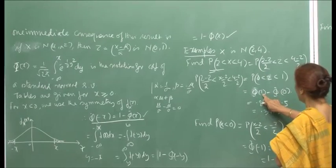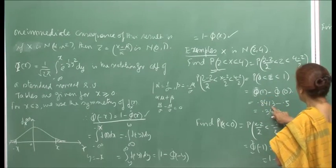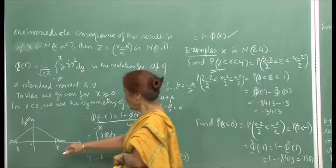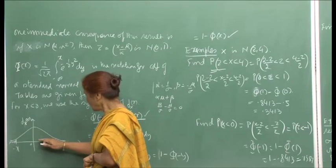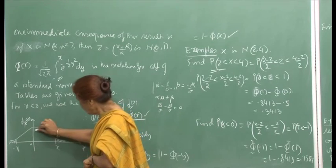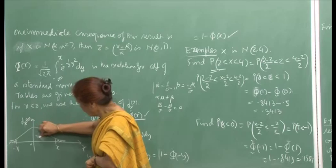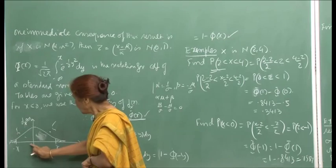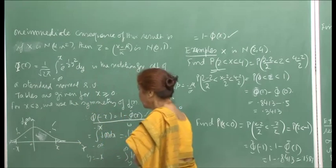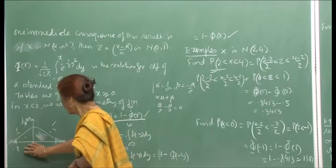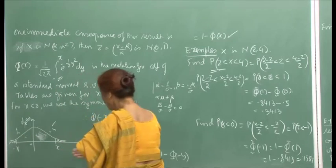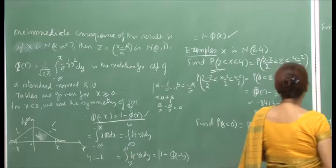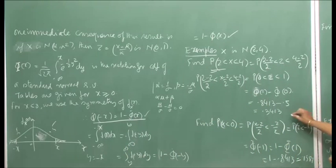From tables, Φ(1) = 0.8413 and Φ(0) = 0.5, because the standard normal is symmetric — the PDF is symmetric about the origin, so the area under the curve to the left of 0 will be equal to 0.5. So Φ(0) will always be 0.5. Therefore, the probability is 0.8413 − 0.5 = 0.3413.